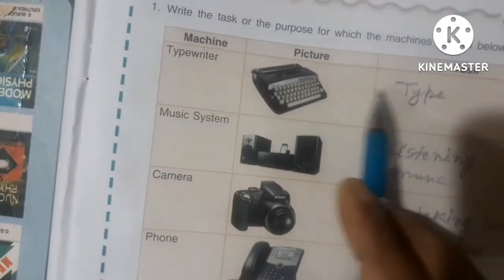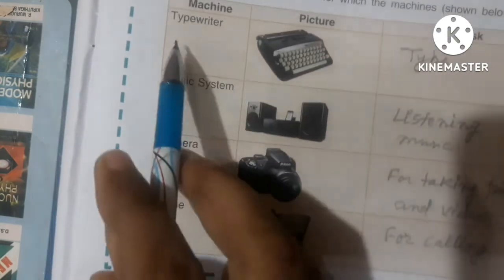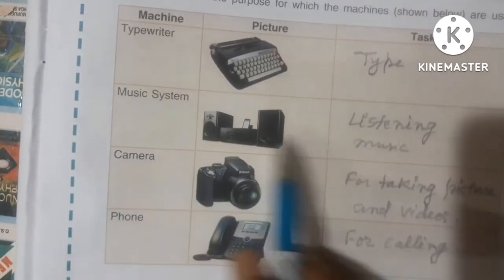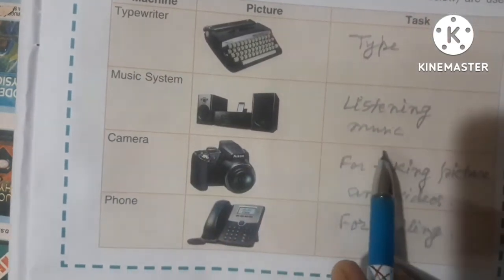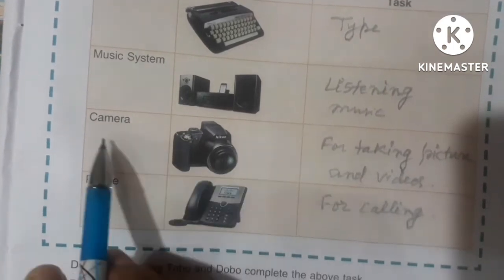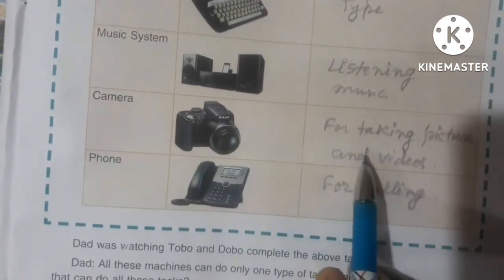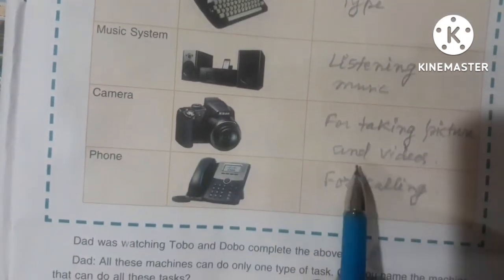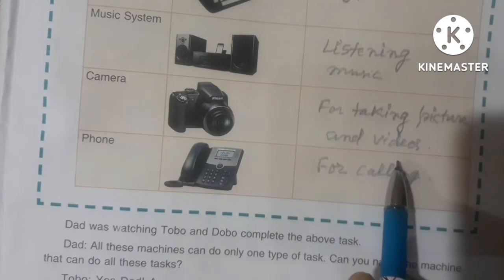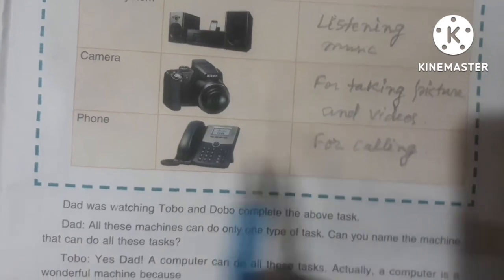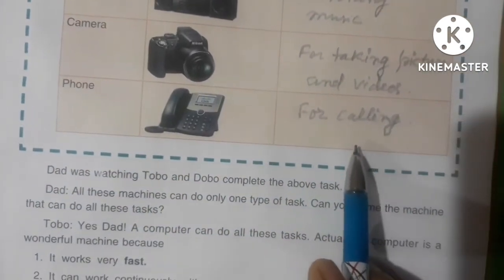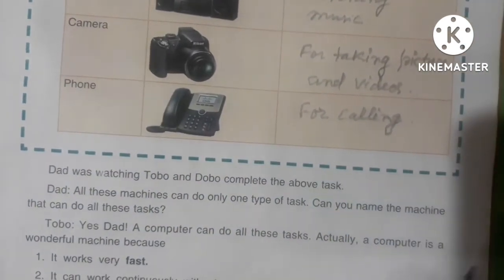Match the machine to its task: typewriter — for typing; music system — for listening to music; camera — for taking pictures and videos; phone — for calling and other purposes.